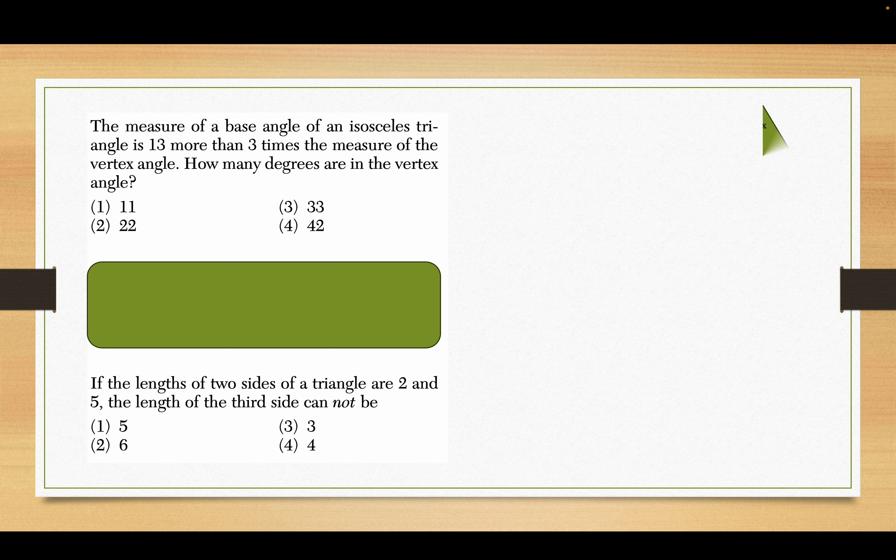Okay, so for the first one, as always, we draw a diagram. An isosceles triangle has two equal sides, and because of that, the base angles across from them are also equal. So we get a 3x plus 13 and a 3x plus 13. And the vertex angle, because the base angles are 13 more than 3 times the vertex angle, the vertex angle was the x we started with.